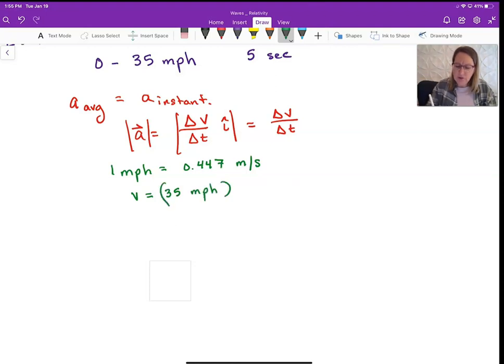And then we'll use this trick that you probably learned in chemistry, where you multiply by a 1 to convert your units. So I want meters per second on the top and I want miles per hour on the bottom, so I just fill things in. I've got a 1 and 0.447. And so when I do this, this gives me 15.6 meters per second.